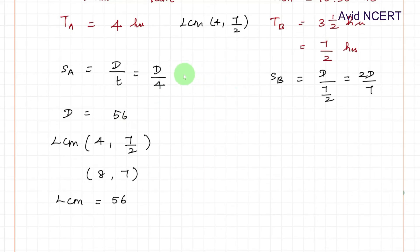Since we know D, we can find SA and SB. SA equals 56 by 4, which equals 14 kilometers per hour, and speed B equals 2d by 7, which is 2 times 56 by 7. 7 times 8 is 56, 2 times 8 is 16 kilometers per hour.